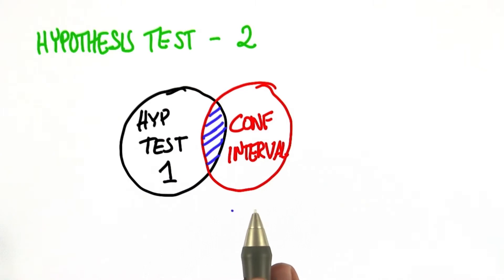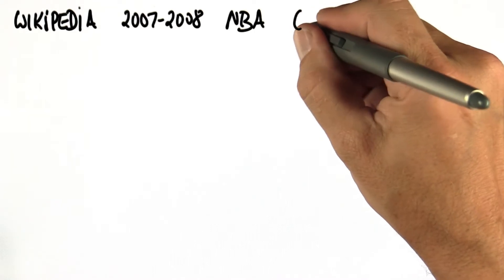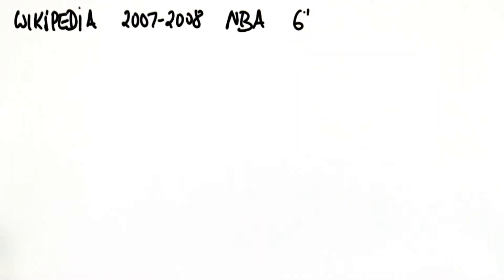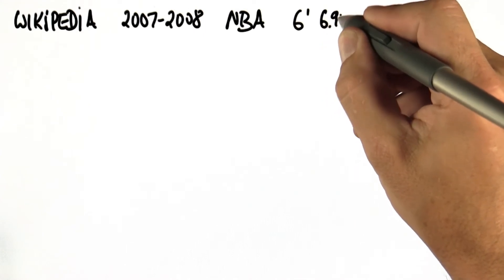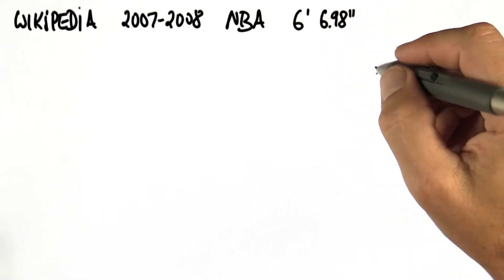And we arrive at a very simple formula that we can't even program. So according to Wikipedia, in the 2007-08 season, the average NBA basketball player was six feet and 6.98 inches tall.